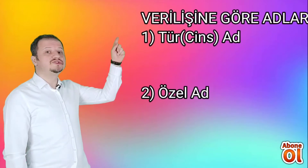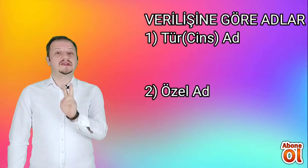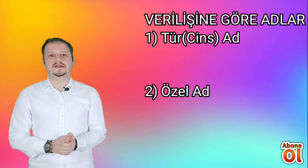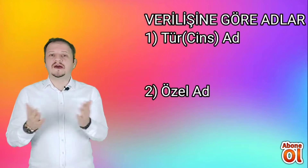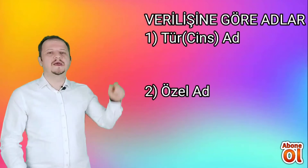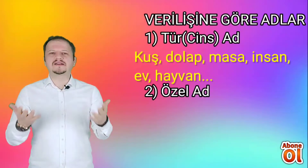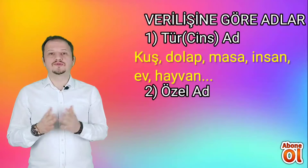Sevgili öğrencilerimiz, canlı ve cansız varlıkları karşılayan kavramları ve durumları anlatmaya çalışan sözcüğe ad, isim dendiğini daha önceki Türkçe derslerinde öğrenmiştiniz. İsimler veriliş türlerine göre tür/cins adı ve özel ad olmak üzere iki çeşitte incelenir. Tür/cins adı, canlı veya cansız varlıkların herhangi bir türüne verilen isimlerdi. Örnek vermek gerekirse: kuş, dolap, ev, masa, insan, hayvan gibi aklınıza gelebilecek birçok isim tür adıydı, cins adıydı.